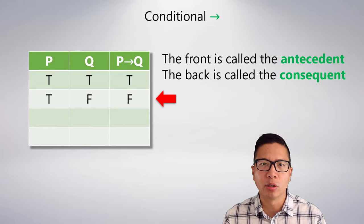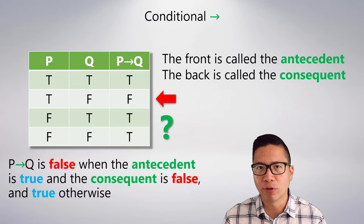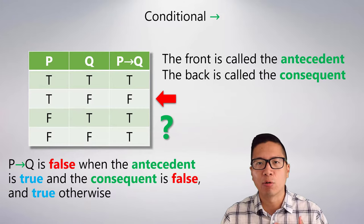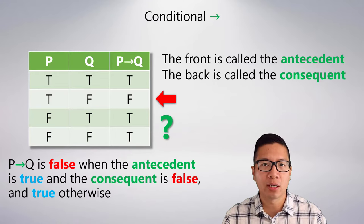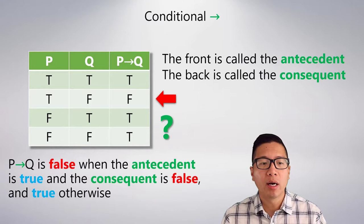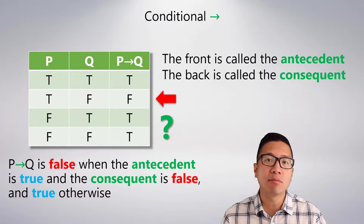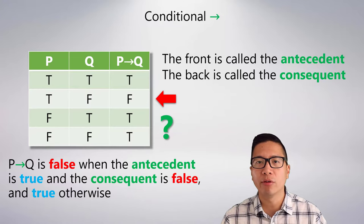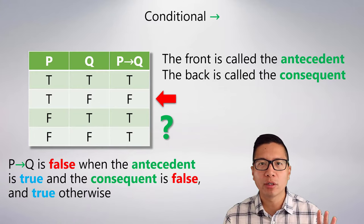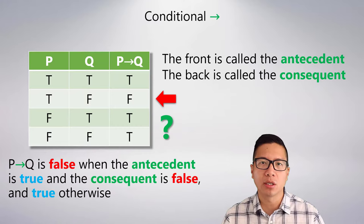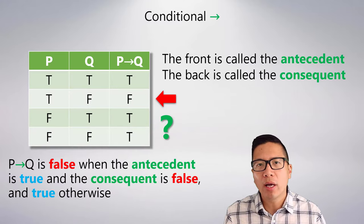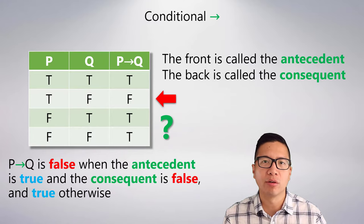The odd part of the conditional occurs when the antecedent is false. If it never rains, is the conditional 'if it rains then the sidewalk is wet' true or false? According to the truth table, if the antecedent is false it doesn't matter what the consequent is — the conditional itself is still true. The conditional is false in only one case: when you have a true antecedent and a false consequent. In all other cases the conditional is true.